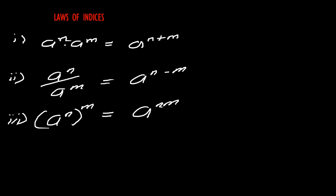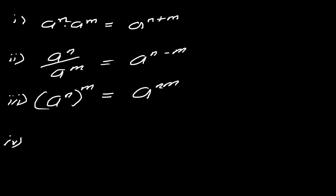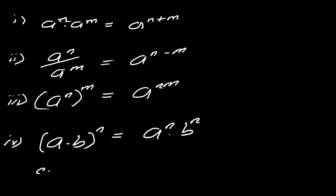A power inside multiplies with the power outside — that is the third law of indices. When you have a power inside the bracket and a power outside, the power outside multiplies the power inside. The fourth law: when you have a product or you are dividing two numbers in a bracket with a power outside, that power outside multiplies all the powers inside. For instance, x raised to power two by y raised to power three, all raised to power a — so a multiplies all the powers inside.